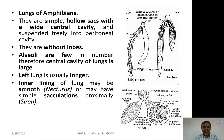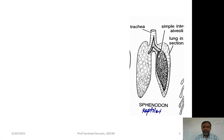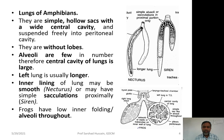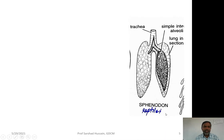The lungs still have a wide cavity. In frogs, alveoli are present on the whole surface of the lungs. Alveoli are essentially foldings of the lung wall in order to increase the surface area for absorption of oxygen and diffusion of carbon dioxide.